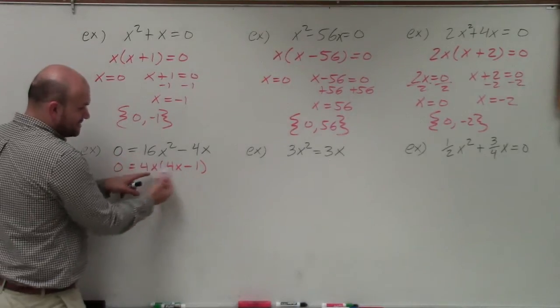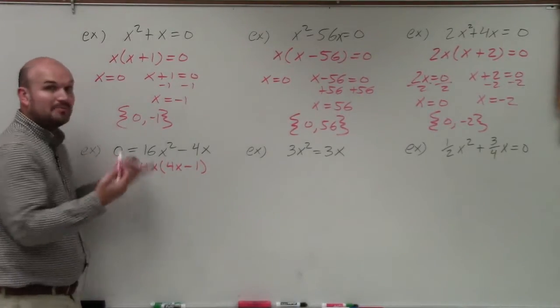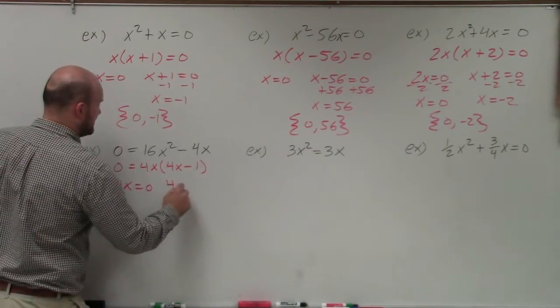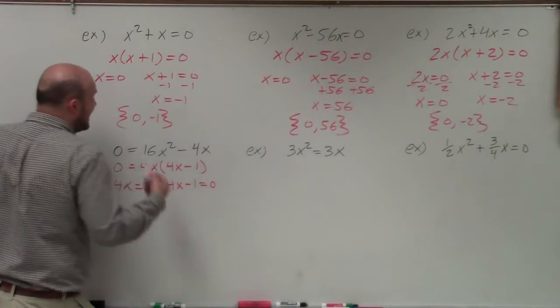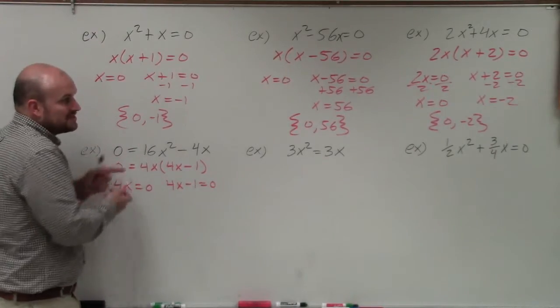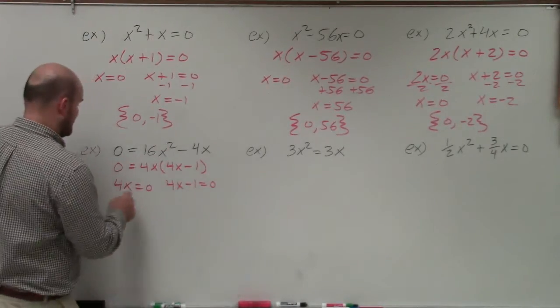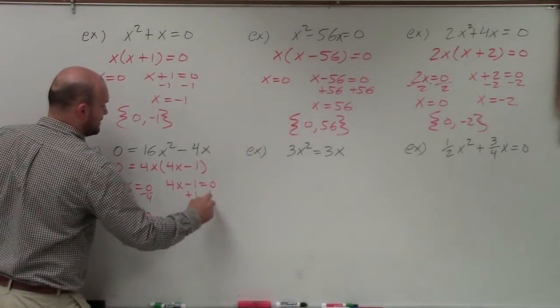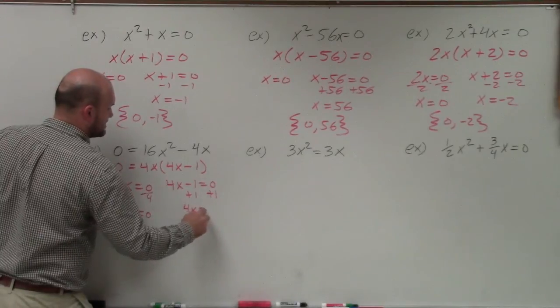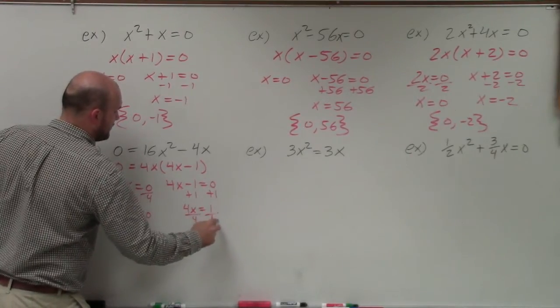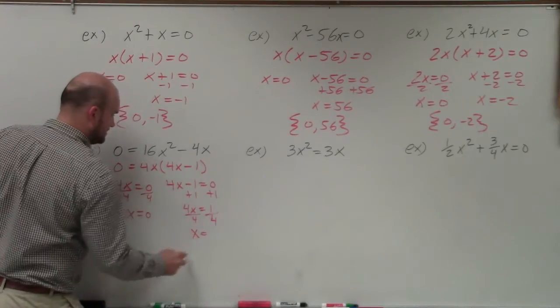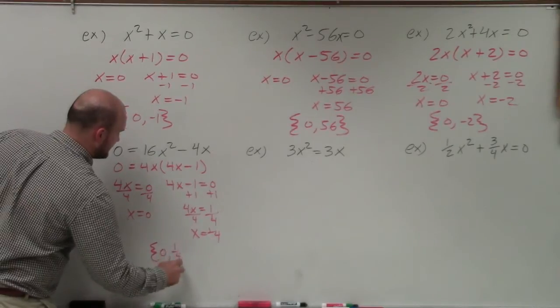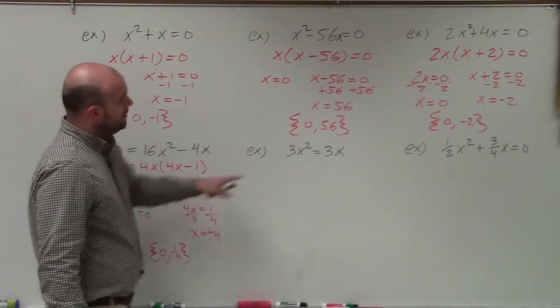You have the product of two expressions equal to 0. Apply the zero product property, set them both equal to 0. So 4x equals 0, and 4x minus 1 equals 0. It doesn't matter if the 0 is on the left side or the right side, it's still going to work. Divide by 4, or you could just say x equals 0. Here I'm going to add 1 to both sides, and then I have 4x equals 1. Divide by 4 on both sides, and x equals 1 fourth. So my solution set is 0 comma 1 fourth.